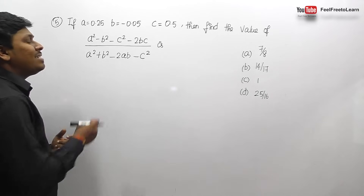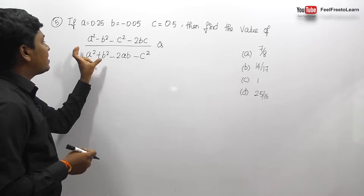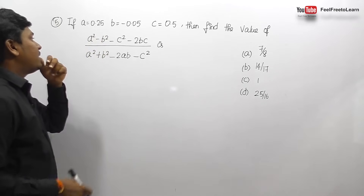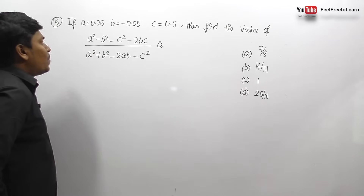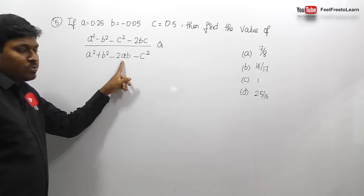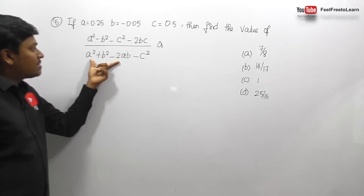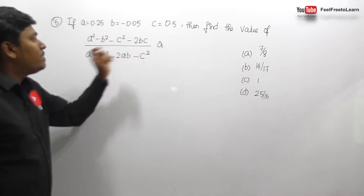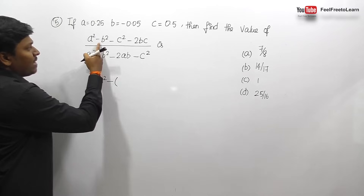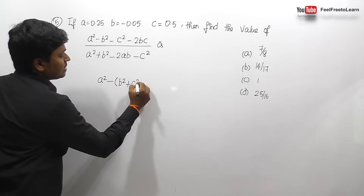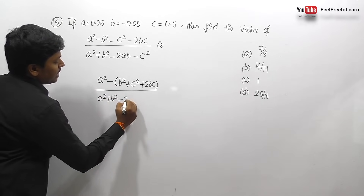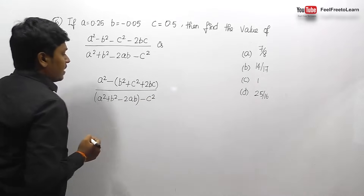Question number 5: a equals 0.25, b equals minus 0.05, c equals 0.5. Find the value of the given expression. Substituting directly would be lengthy, so let's simplify first. The denominator looks like a² + b² minus 2ab, which is (a minus b)², and the numerator contains b² + c² + 2bc.